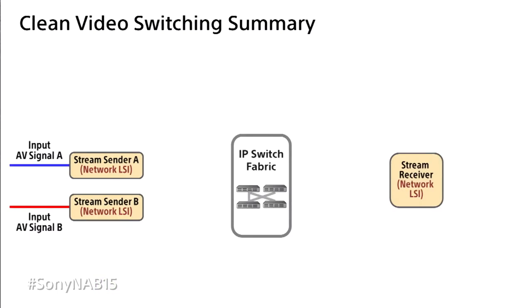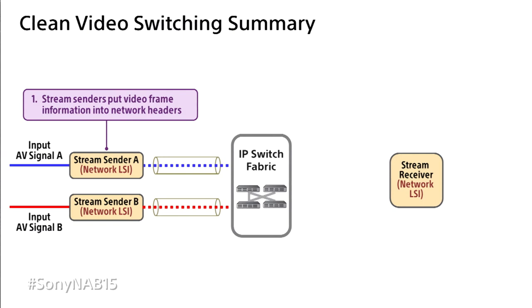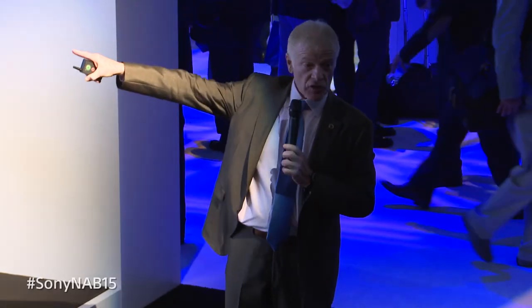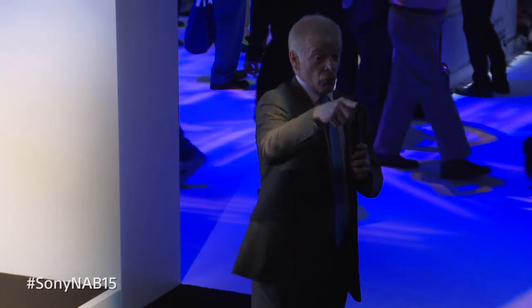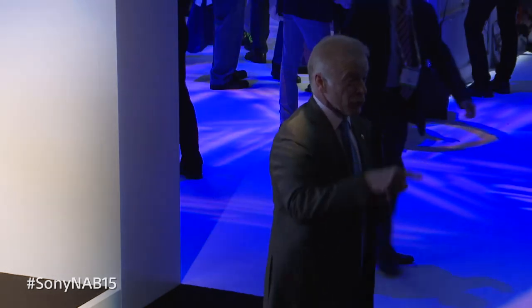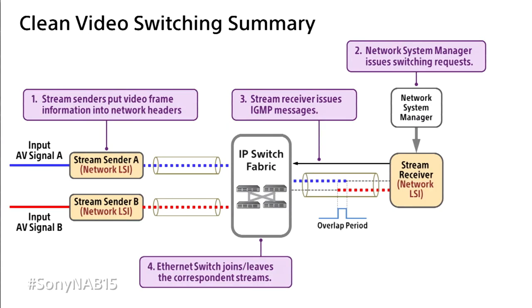To summarize: the two cameras convert audio-video into packets. The receiver issues the switching message through the system manager — triggered by the operator pressing a button on the controller. IGMP messages go to the IP fabric. The overlapping packets are discarded, and we produce clean video. You can see this demonstrated at the back of our booth in our production switcher with demos showing how fast the switching takes place.